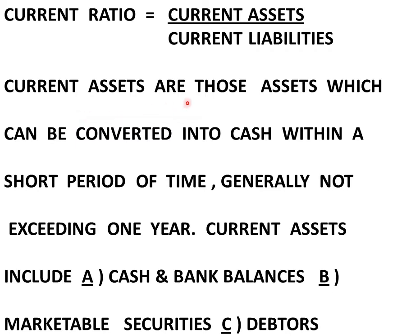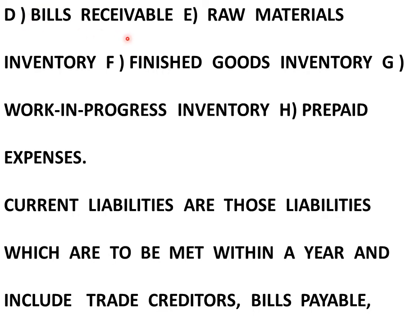Current assets are those assets which can be converted into cash within a short period of time, generally not exceeding one year. Current assets include cash and bank balances, marketable securities, debtors, bills receivable, raw materials inventory, finished goods inventory, work in progress inventory, and prepaid expenses.